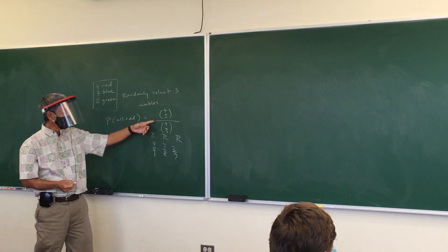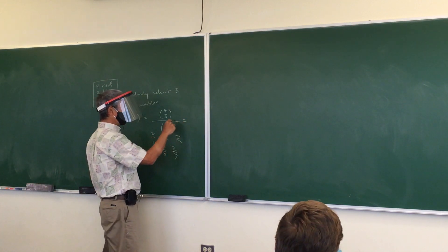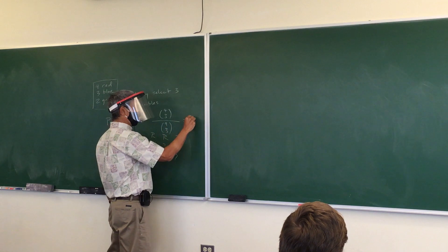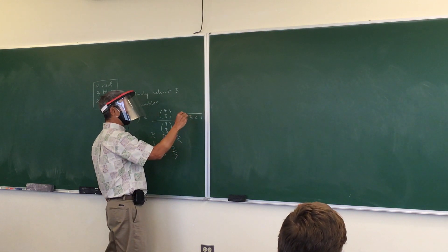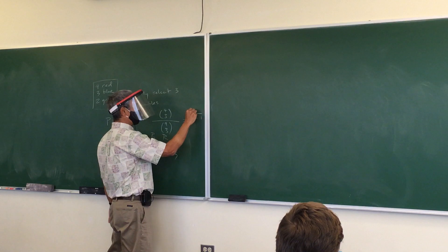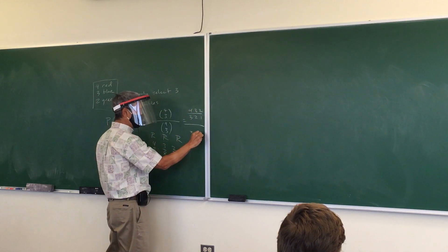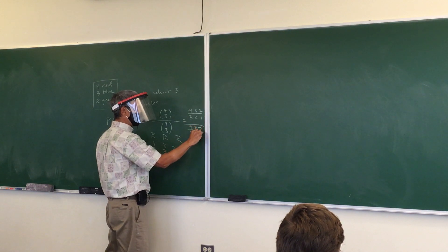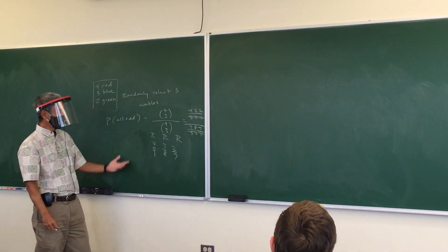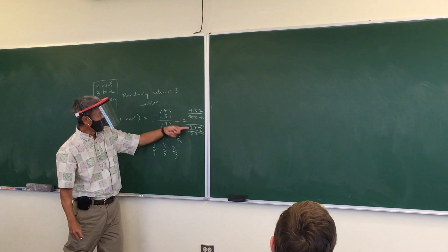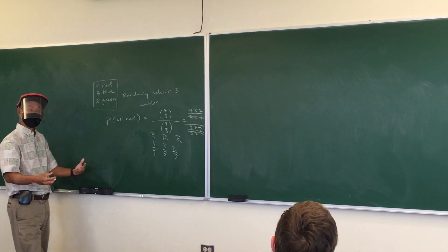Can you see that both of these things are equal? How would you compute four choose three? That's 4·3·2 over 3·2·1. And nine choose three is 9·8·7 over 3·2·1. The 3·2·1s cancel out, and you can see they're exactly the same: 4/9, 3/8, 2/7. It's exactly the same.